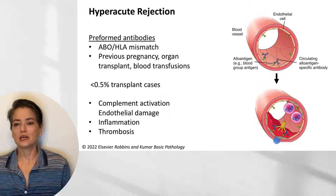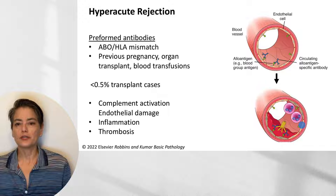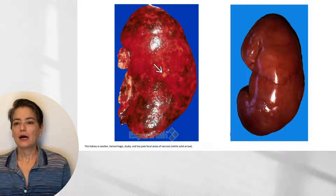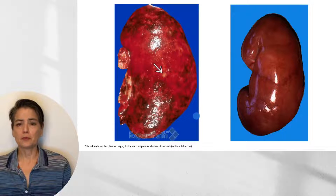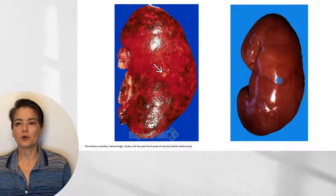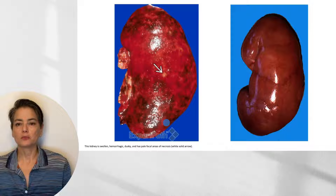This leads to inflammation with additional neutrophils recruited, and very rapid thrombosis. A comparison of a healthy kidney versus hyperacute rejection — probably due to ABO incompatibility — shows the rejected kidney is very swollen and turgid, lacking normal kidney markings, with a mottled appearance: dark areas of hemorrhage that are almost black, and pale areas of necrosis. If the surgeon attaches the vasculature and sees this happening, the organ must be removed immediately.